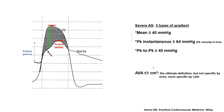However, the problem is that frequently you can have severe AS without those high gradients, whether your EF is normal or low, whether your flow is normal or low. That's why we also use aortic valve area to define severe AS. The aortic valve area is the ultimate definition of severe AS — you can have a valve area less than 1 cm² with a gradient less than 40 mmHg. The problem is that valve area is non-specific by echo. Half the patients whose valve area is less than 1 by echo with gradient less than 40 do not actually have severe AS — they have miscalculation.